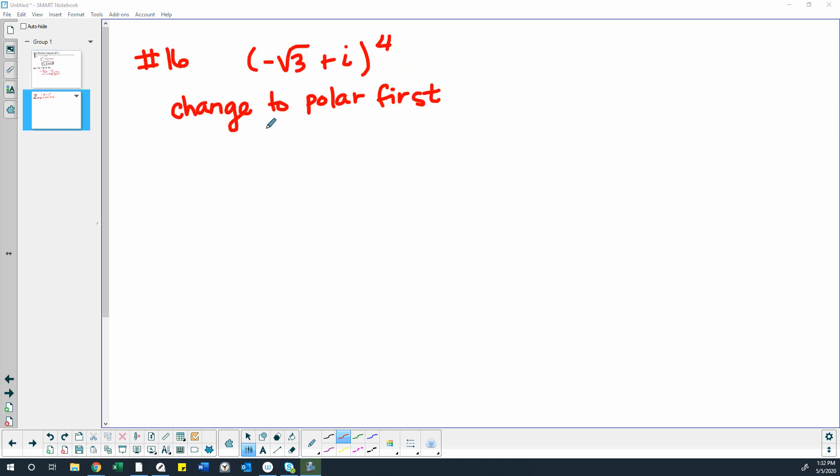So this is question 16 from the review. We're going to change this to polar first. So to do that, we want to find r, which is the square root of the negative square root of 3 squared plus 1 squared, which is the square root of 3 plus 1, which is the square root of 4, which is 2.